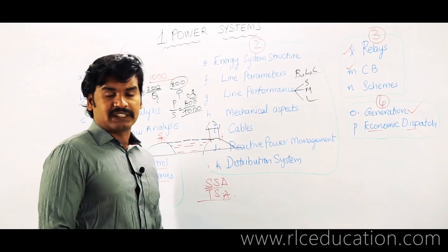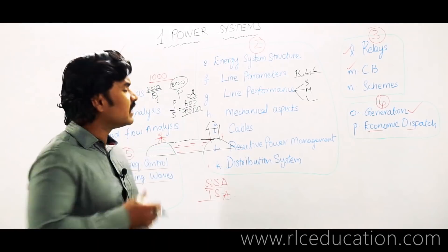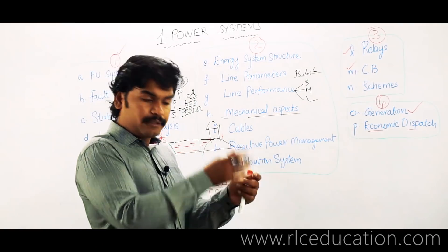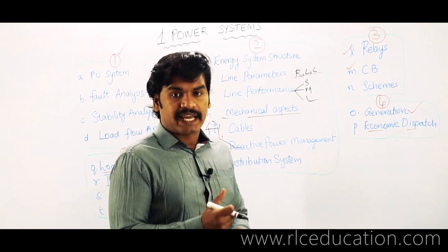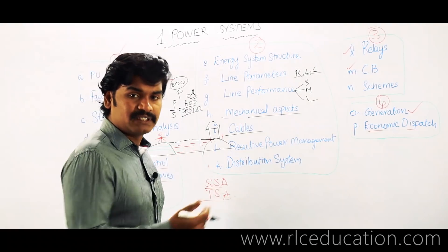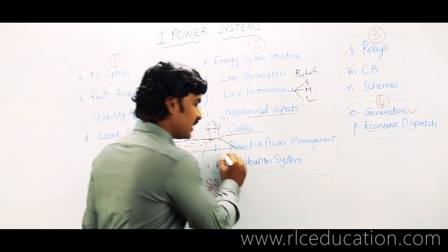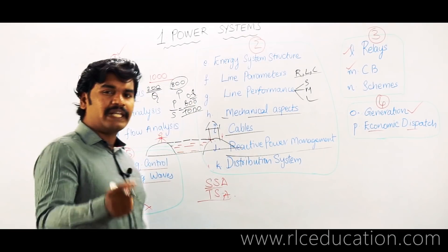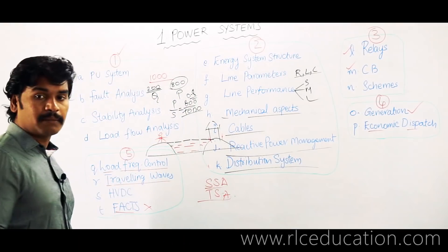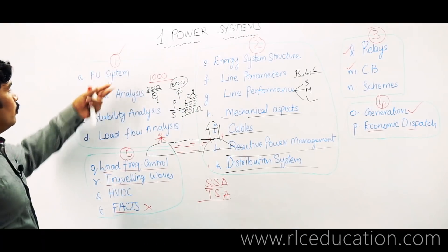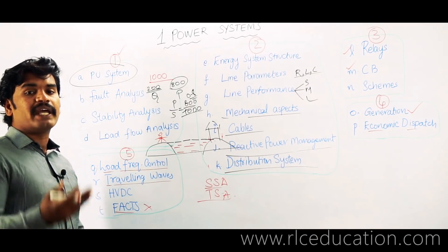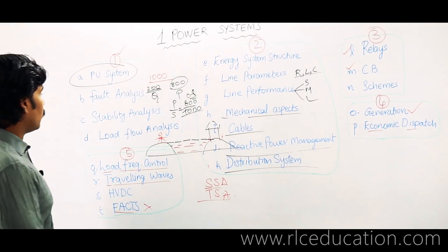In line performance, we analyze how much voltage is sent and how much is received at the receiving end. Transmission lines are divided into short, medium, and long based on frequency and distance. Mechanical aspects include tower height, string efficiency, and sag calculation. In cables, we discuss different types, as the industry is moving from overhead lines to cable systems. The per unit system is a universal system that simplifies power system analysis.